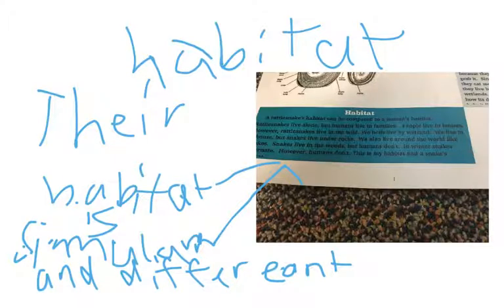Well, both humans and rattlesnakes live by wetlands. They also live in the mist that humans sometimes do, but sometimes don't.